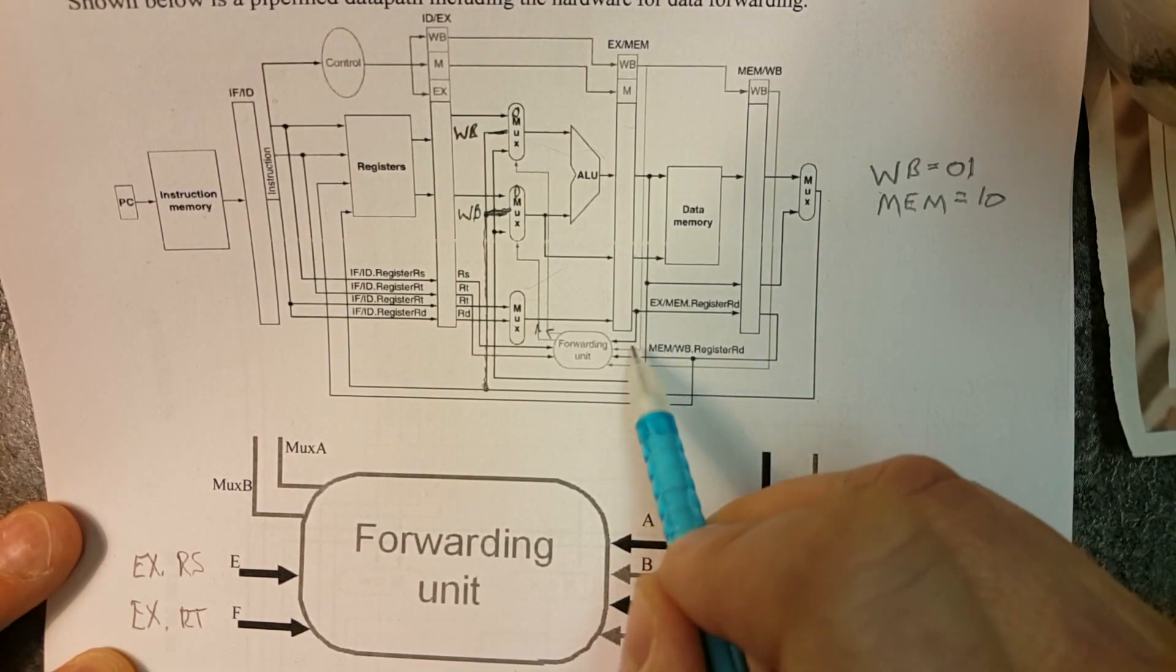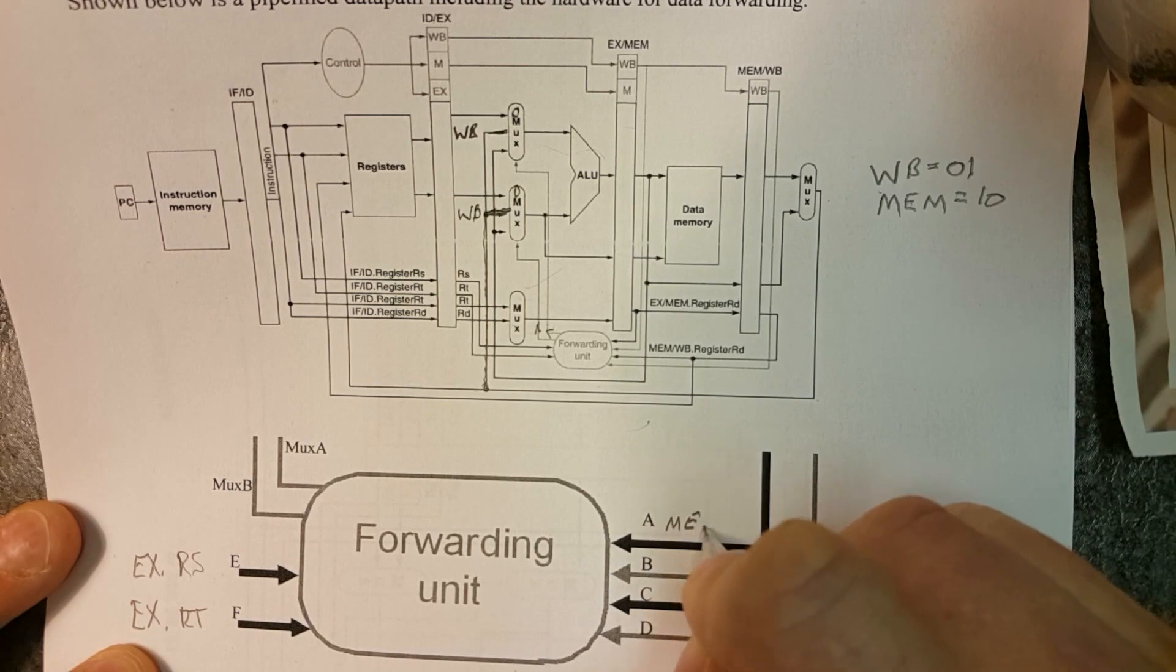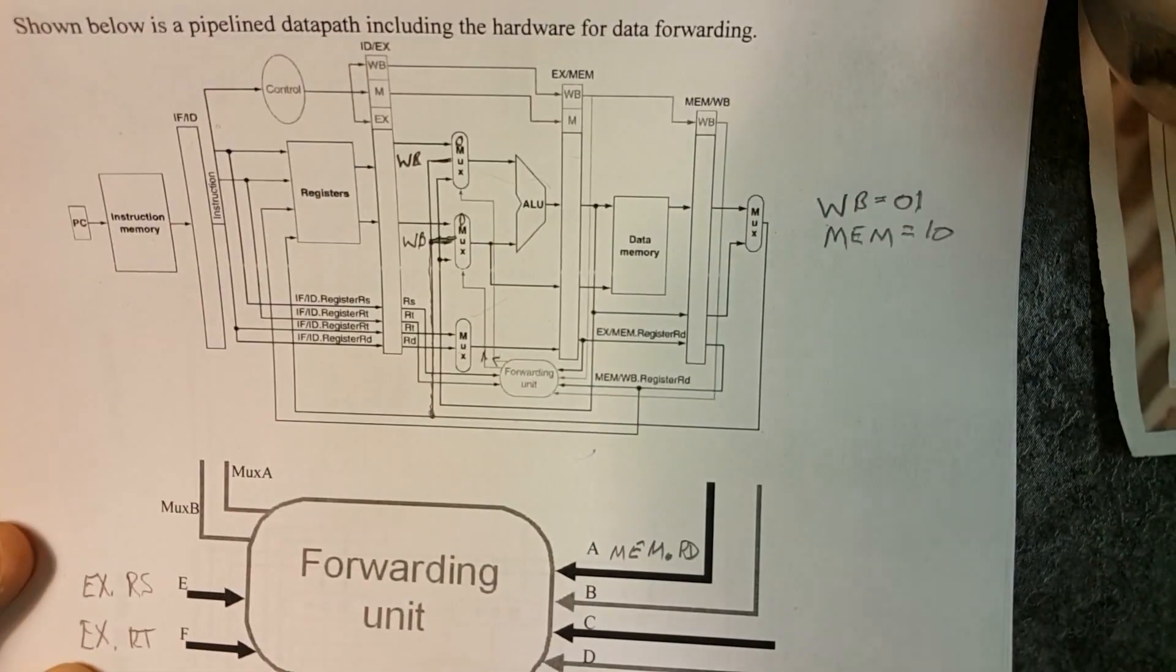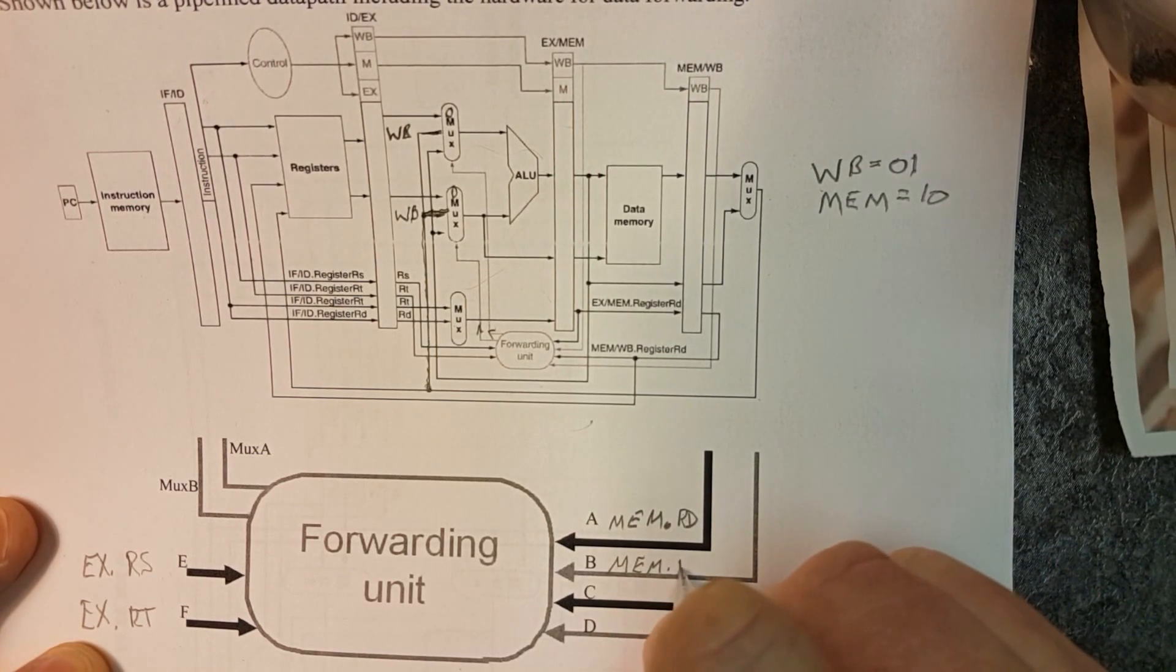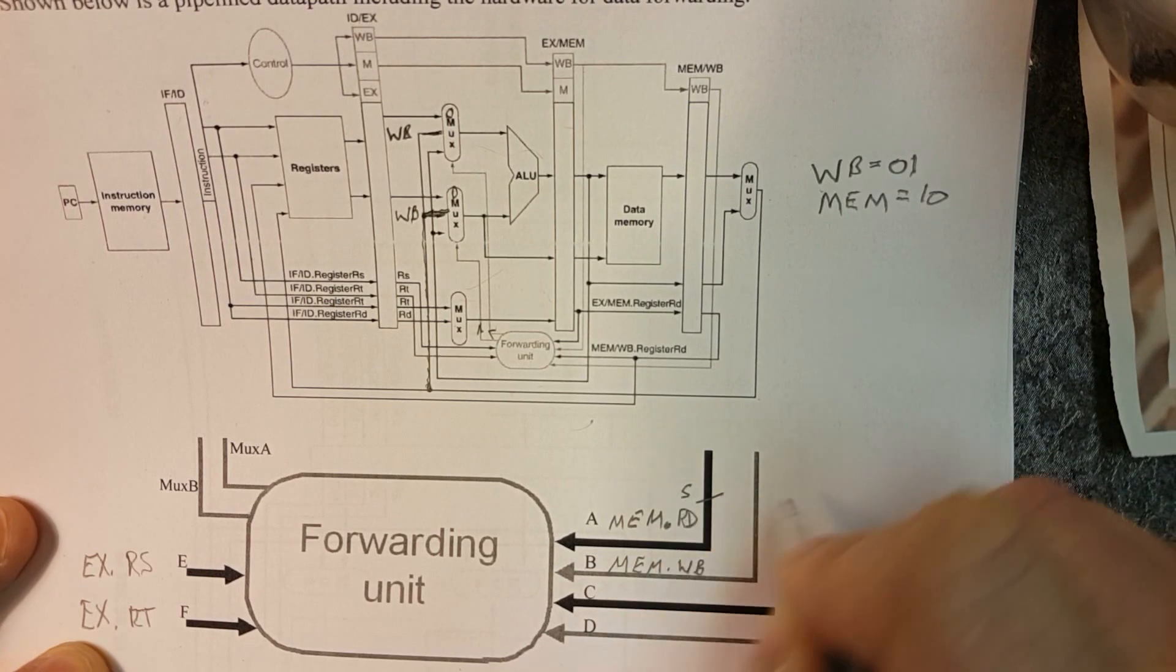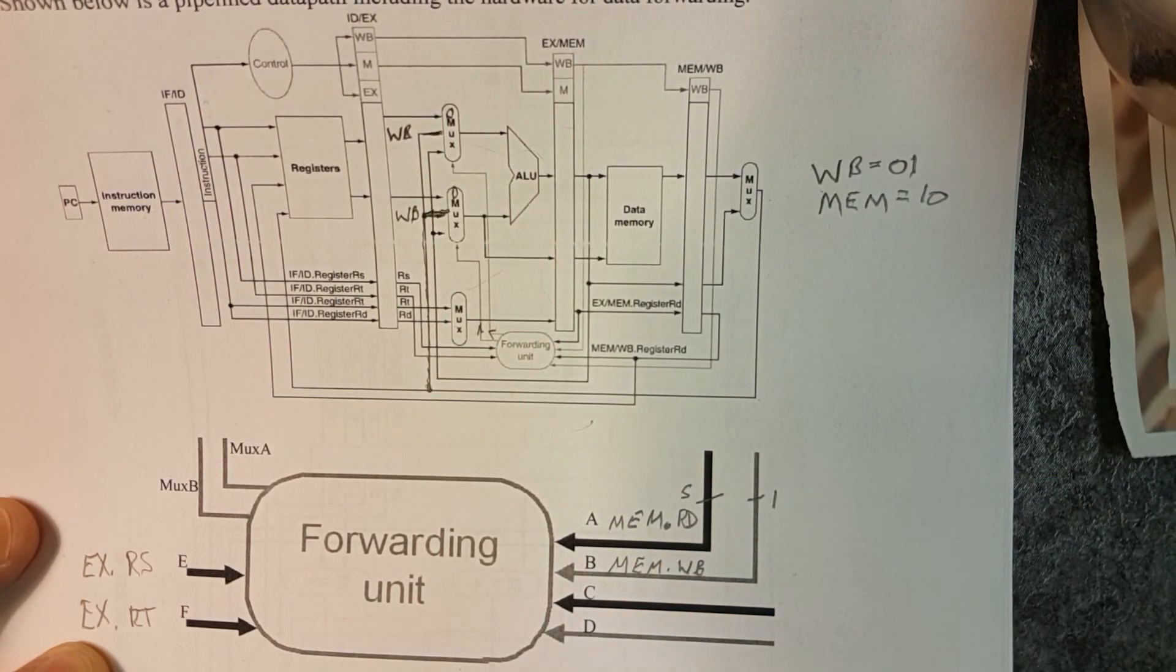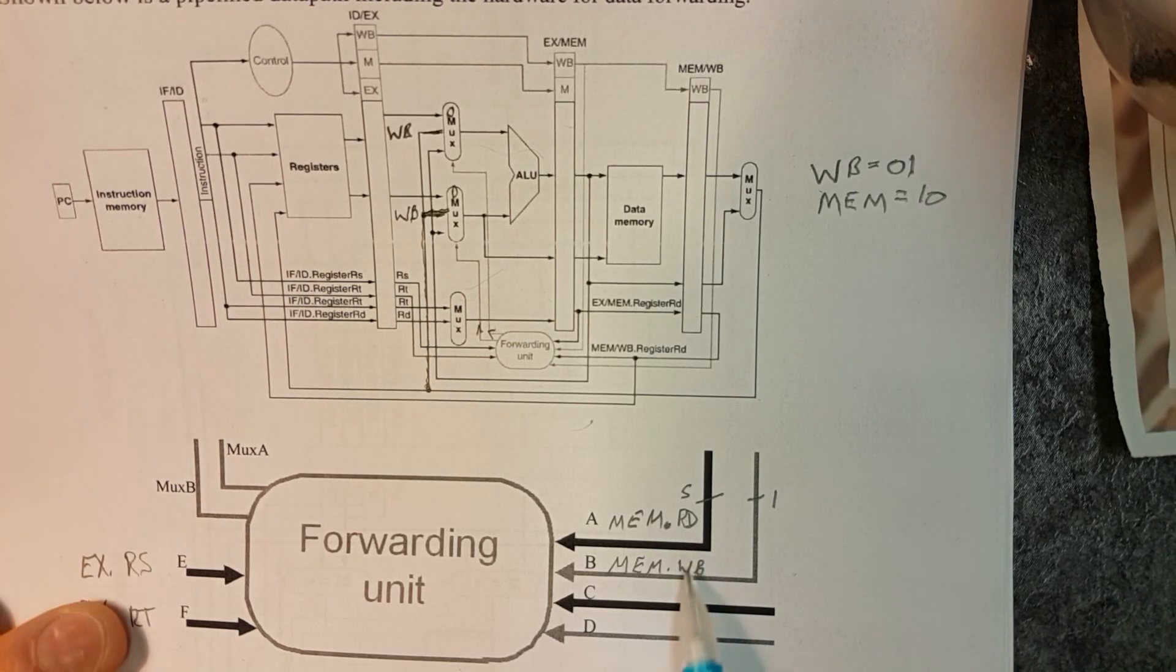Then we look at this, and A is going to be from the MEM phase, and it's going to be RD. Then this is going to be MEM.RD. And just to be sure, we've got five and we've got one. So it's a five-bit signal that indicates the destination register.